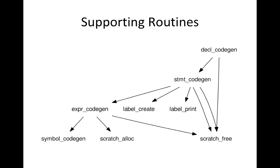As with everything else in the compiler, we're going to break down all of the steps in code generation into a variety of functions that operate on each of our basic structures of declarations, statements, and expressions. In order to make this work, we're going to need some supporting routines that will manipulate symbols — we already have a module for that. Then we need to create a new module for dealing with scratch registers that will allocate and free them, a simple module for creating and printing labels. And if we put everything together and keep it recursive and lazy, it will be pretty straightforward.